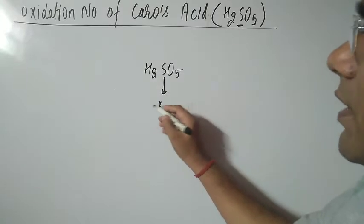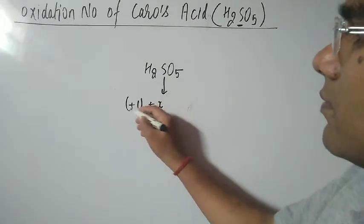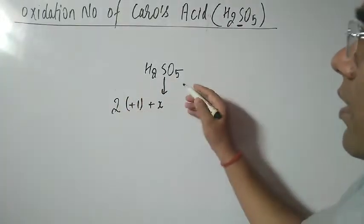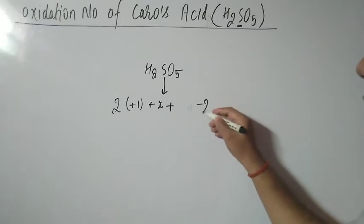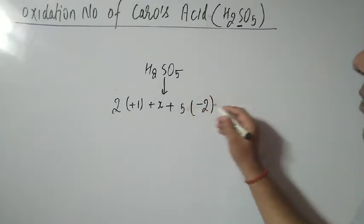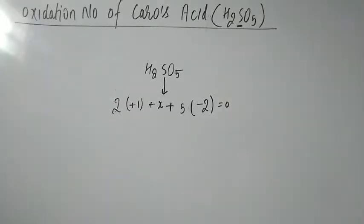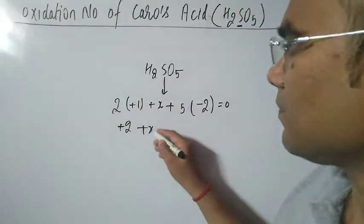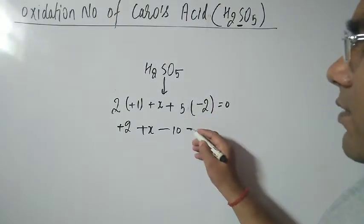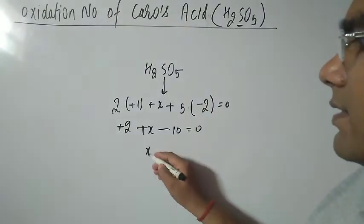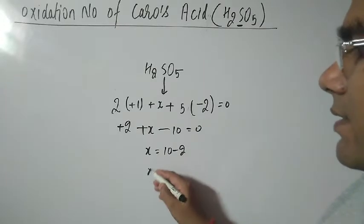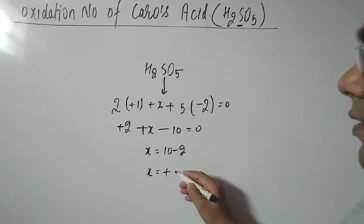Suppose we consider sulfur to be X. Hydrogen is plus 1 in case of non-metal oxides, and there are 2 hydrogens, so that is plus 2. Oxygen is minus 2 multiplied by 5. Setting the sum equal to 0: plus 2 plus X minus 10 equals 0, so X equals plus 8.